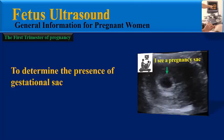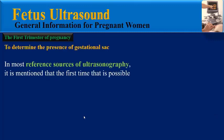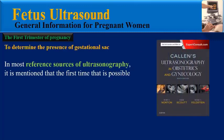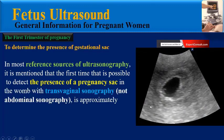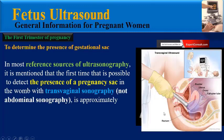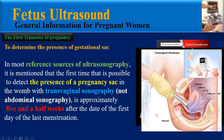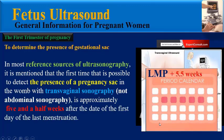The first purpose is to determine the presence of the gestational sac. In most reference sources of ultrasonography, it is mentioned that the first time it is possible to detect the presence of a pregnancy sac in the womb with transvaginal sonography — not abdominal sonography — is approximately five and a half weeks after the first day of the last menstruation.